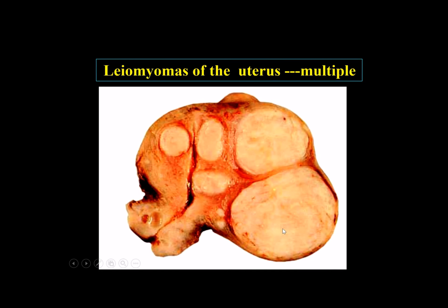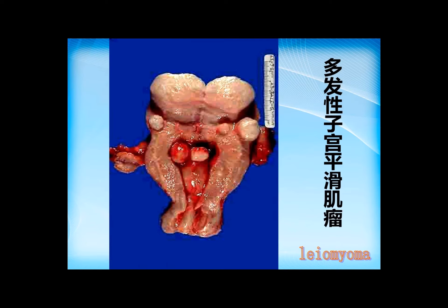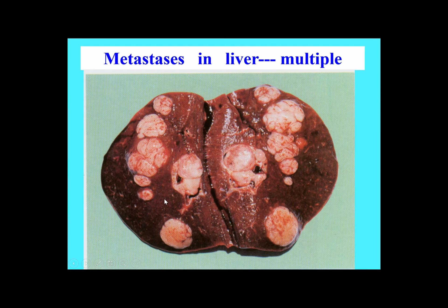This specimen is a uterus. On the cut surface, we can find many nodules, so the number is multiple. This is another specimen — on the cut surface we can find multiple nodules. This is a metastatic tumor.